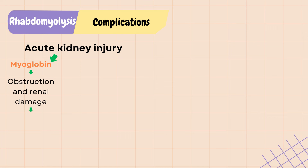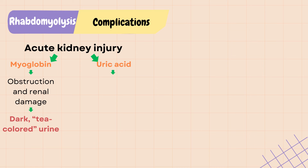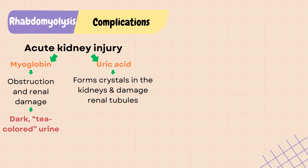The presence of myoglobin in the urine is what causes the characteristic dark tea-colored urine of rhabdo, due to the iron component in myoglobin. Uric acid is also a byproduct of cell death and can form crystals in the kidneys and damage renal tubules.